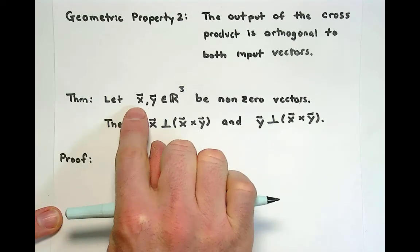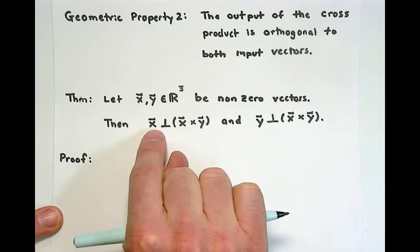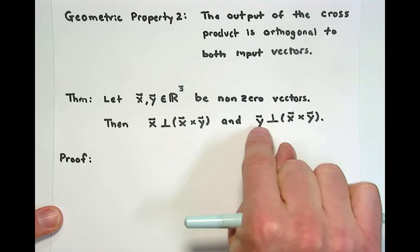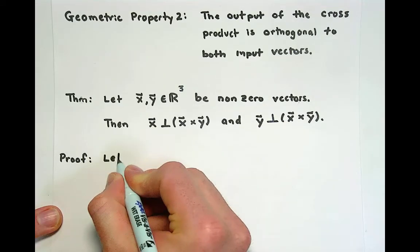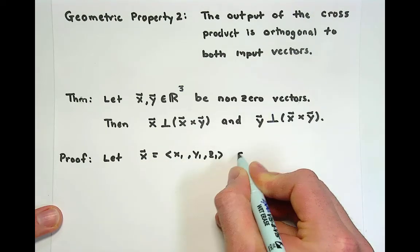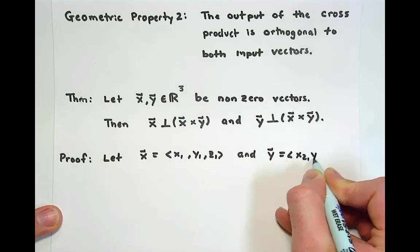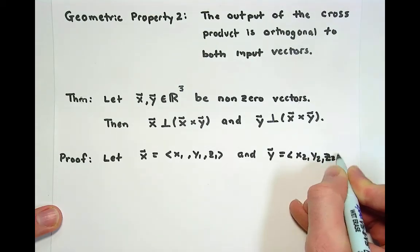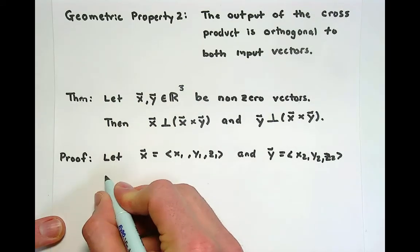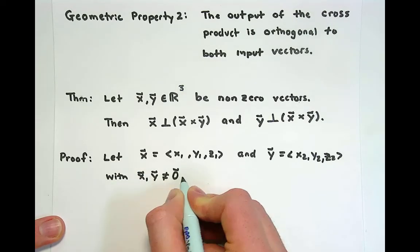Statement of the theorem looks like this. If I have two vectors in R³, both of them non-zero, then the cross product is perpendicular to x, and the cross product is orthogonal to y. Let's do a proof of these by letting x equal x₁, y₁, z₁, and y be x₂, y₂, z₂, and we'll let these both be non-zero vectors.